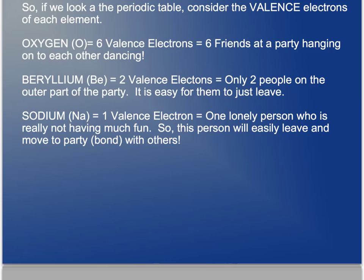And now for the textual learners. If you look at the periodic table, consider the valence electrons of each element. Oxygen has six valence electrons, which equals, in the metaphor, six friends at a party hanging on to each other dancing. Difficult to break. You need a good amount of energy to come in and bust off one of those friends. They all want to stay. They're having a great time. Beryllium, there's only two valence electrons, which is only two people on that outer part of the party. It's easy for them to just leave. Sodium, similar to hydrogen, only has one valence electron. It's one lonely person who's really not having much fun, so this person will easily leave and move to party or bond with others.